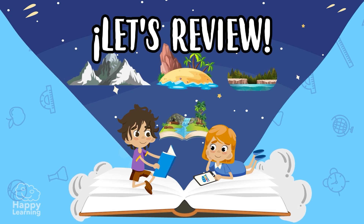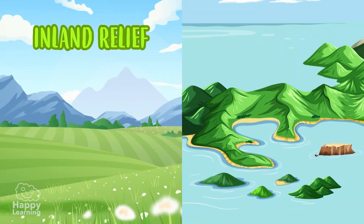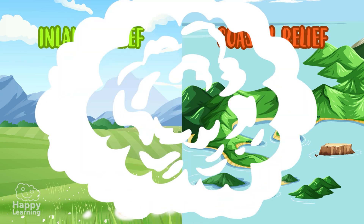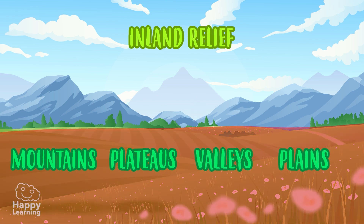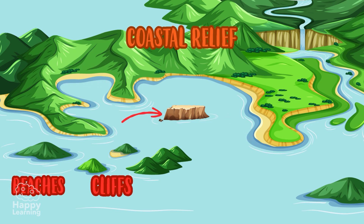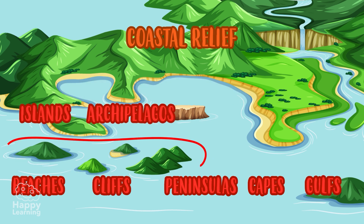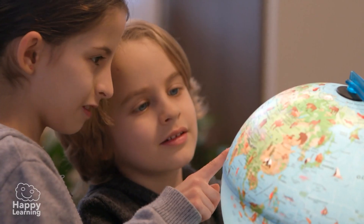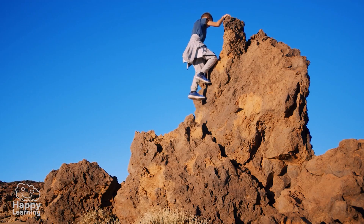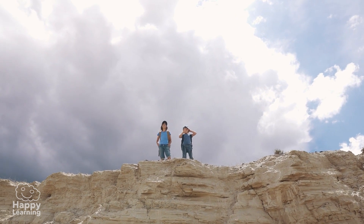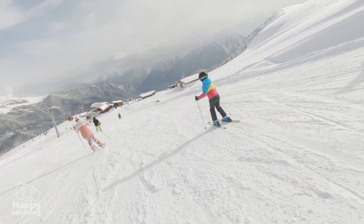Let's review what we have learnt. Relief is the set of landforms on the Earth's surface. We can divide it into two groups: inland relief and coastal relief. Inland relief has mountains, plateaus, valleys, and plains. Coastal relief has beaches, cliffs, peninsulas, capes, gulfs, islands, and archipelagos. Have you noticed how varied our Earth's reliefs are? The next time you see a physical map full of green and brown colours, remember that each of these relief shades refers to a different landscape — a place that nature has shaped over a long, long time — so that we can take care of it, respect it, and enjoy our wonderful planet.